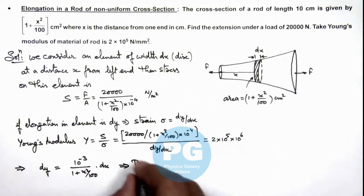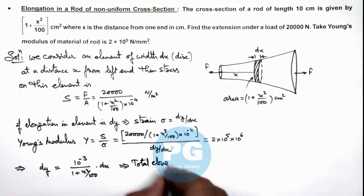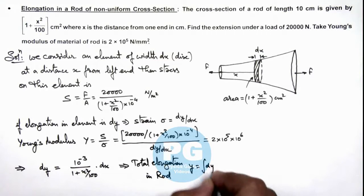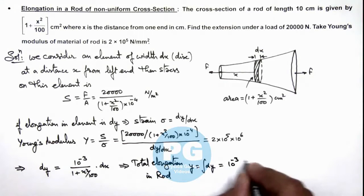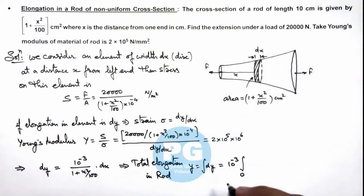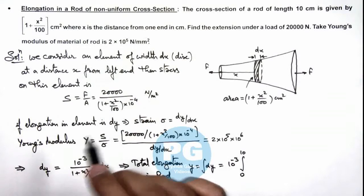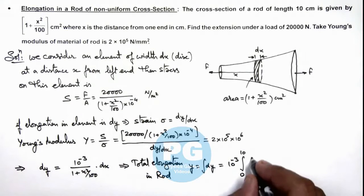So here if we calculate the value of dy, this implies the value of dy we are getting is numerically on simplifying these values, this will give us 10 to power minus 3 divided by 1 plus x squared by 100 times dx. This implies total elongation in rod can be given as y, which is integration of dy. And if we integrate this value, this 10 to power minus 3 integration from zero to the length of rod is 10 centimeter. So this will be from zero to 10 because we are given that the value of x is in centimeter. So we take it 1 upon 1 plus x squared by 100 times dx.